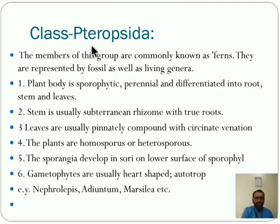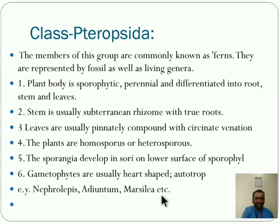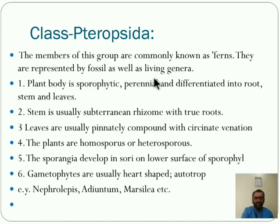The next class is Pteropsida. Members of this group are commonly known as Ferns. Nephrolepis is commonly known as the Fern. Adiantum and Marsilea are also examples of this Pteropsida group. They are represented by fossil as well as living genera — Nephrolepis Fern is the living form.